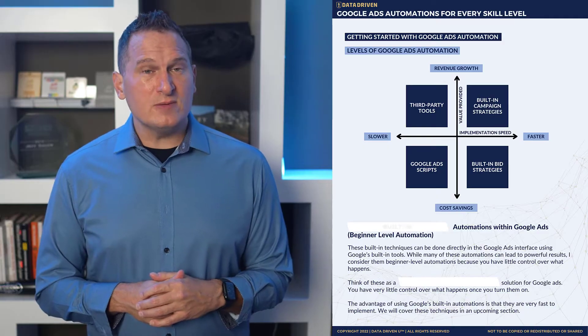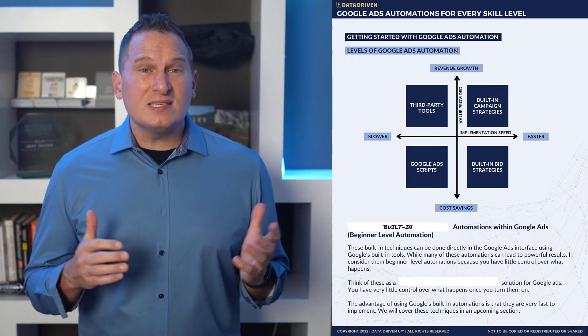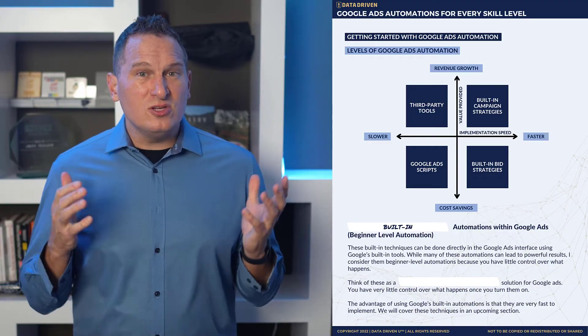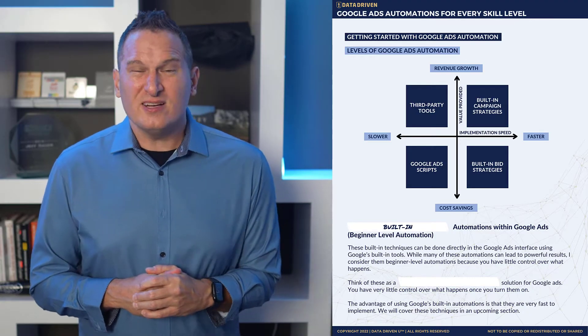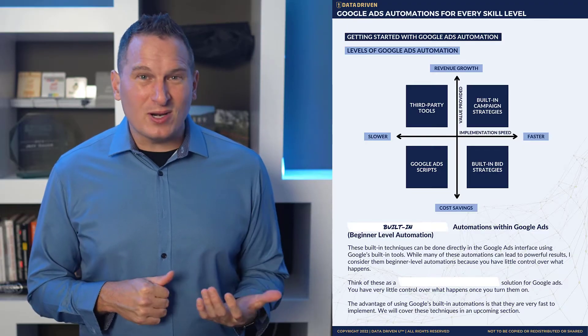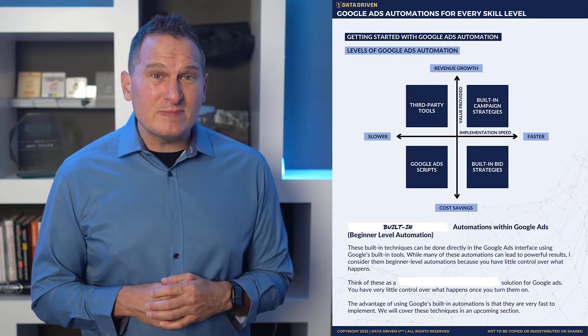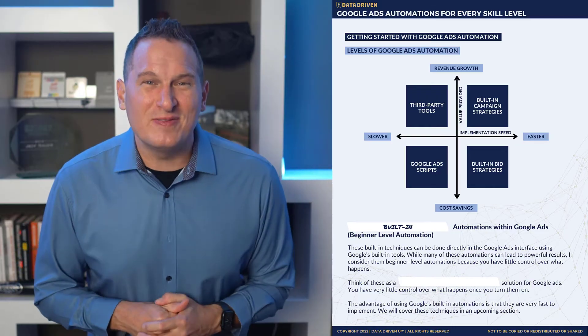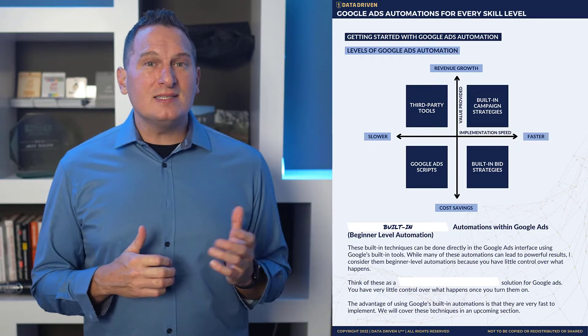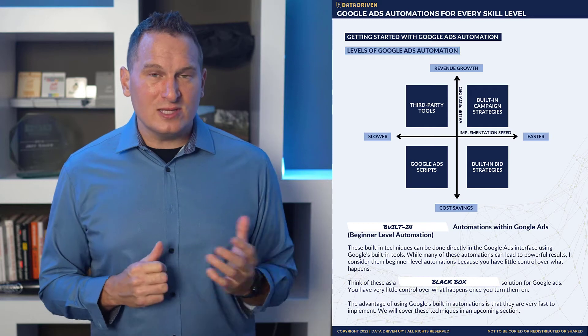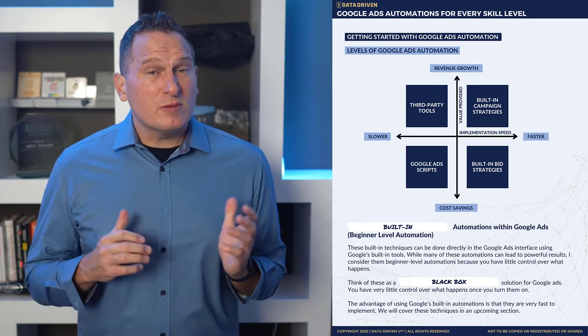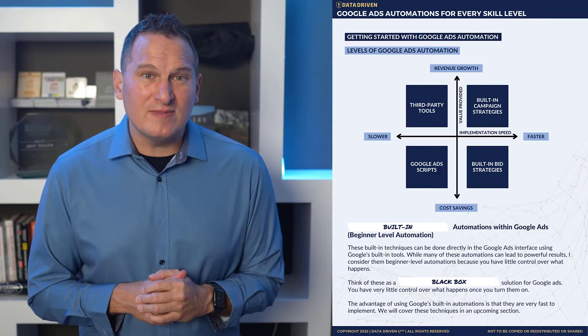Let's talk about the levels of Google Ads automation. The level of automation that's right for you depends on the value that you want, how quickly you want to get it implemented, and the cost savings you want to achieve. If you're at a beginner level, you'll want to use built-in automations within Google Ads because this gives you faster implementation and you can use these tools directly inside the Google Ads interface. For example, we have smart creatives, smart campaigns, smart bidding, Performance Max, and automatic placements. Keep in mind, since it's all a black box solution within Google, you'll have little control over what happens, but the big advantage is that you can implement these very quickly without a ton of effort.